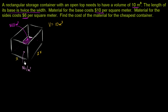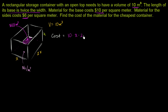But x only gives us the dimensions of the base — we also need a dimension for height, so it'll be a function of x and h for now. Let h be the height. The cost of the base is going to be 10 times the area of the base, which is width times length: 10 times x times 2x.